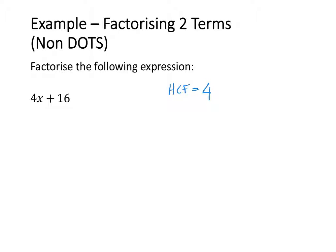The second step is to write both terms in terms of that highest common factor. So 4x is going to equal 4 times x, and 16 is going to equal 4 times 4. The third step is to remove the highest common factor and replace it outside of the brackets. Then the last step is to take what is remaining and place it inside the bracket: x plus 4. So the factorised version of 4x plus 16 is equal to 4(x plus 4).